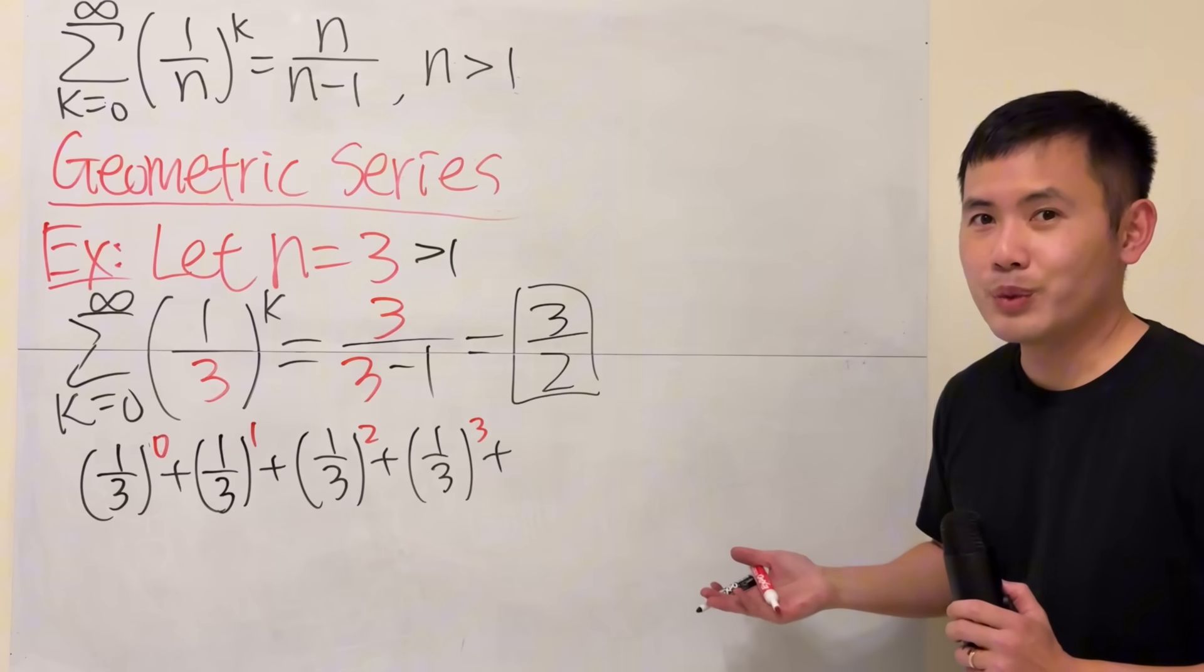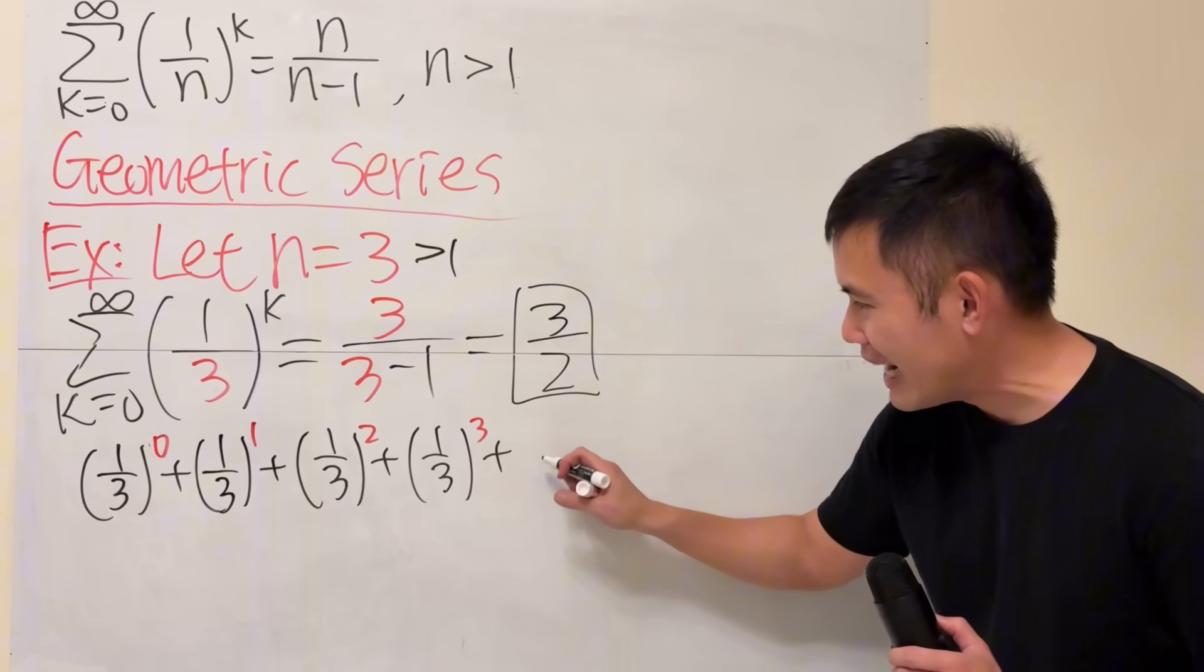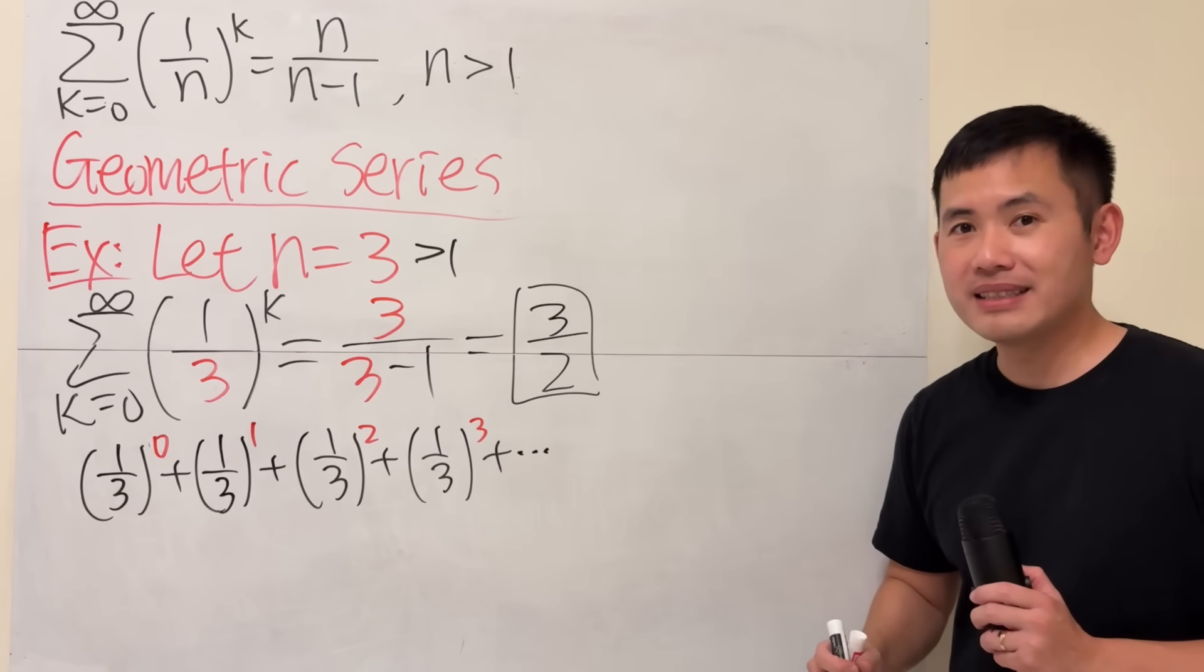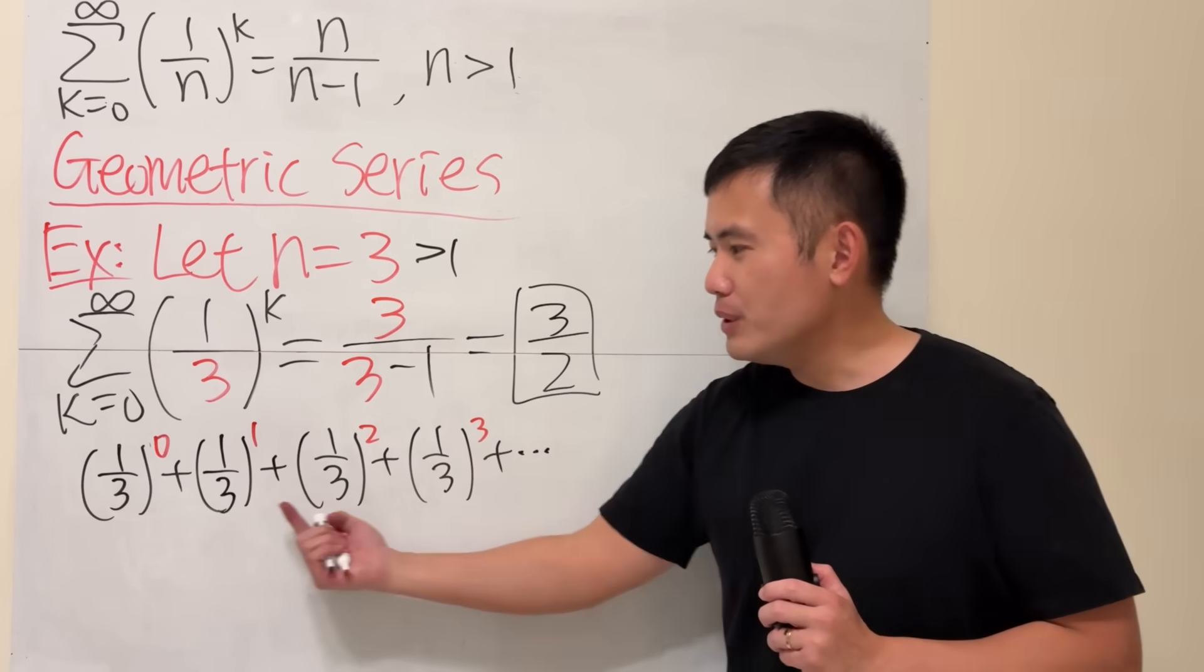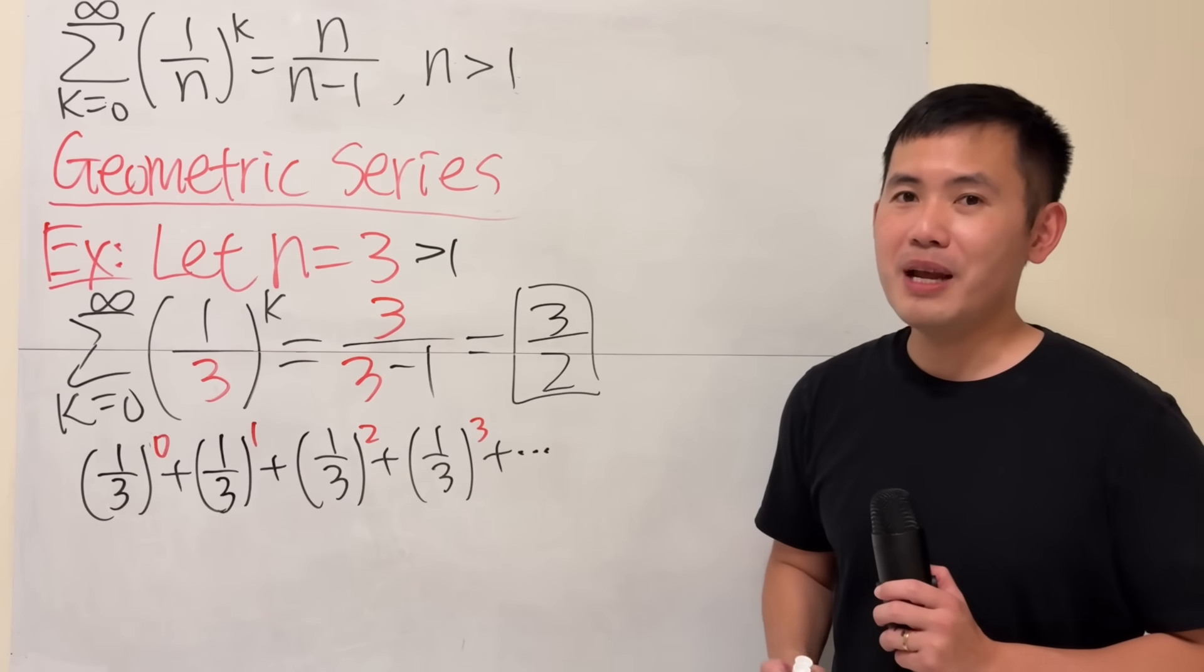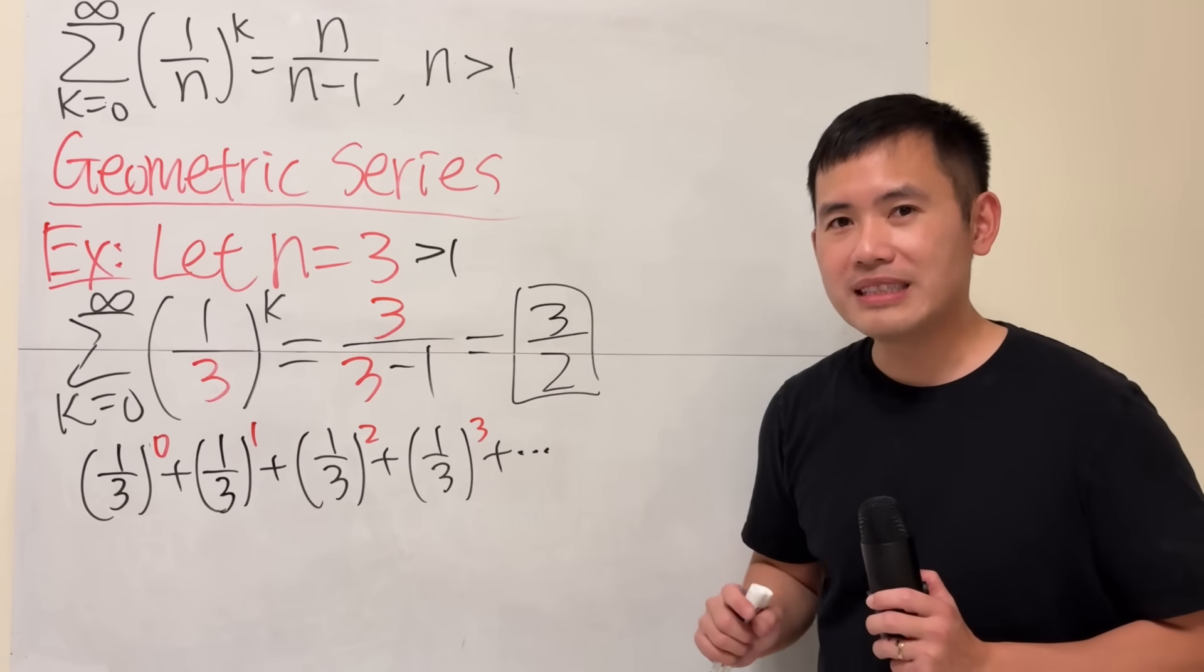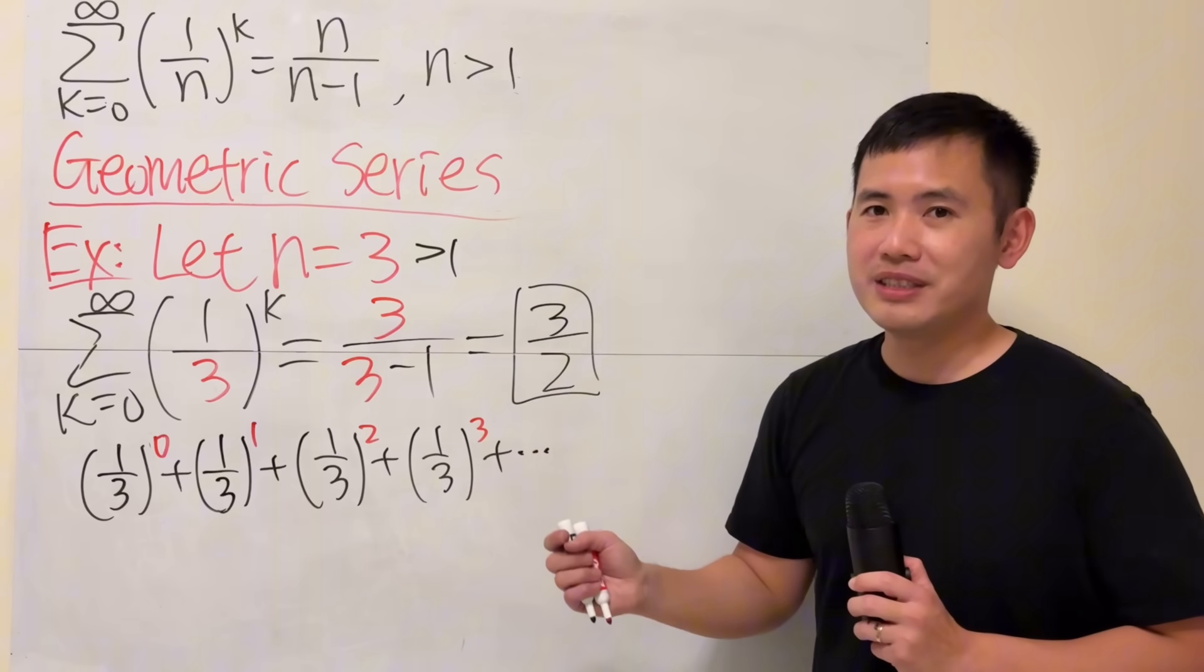When do we start? When do we stop, though? Well, never, because this is infinity. So you just keep adding forever. And usually we just put down plus dot dot dot. Now, if you look at this, notice that the base is always going to be the same. It's just the exponent is changing. Whenever this happens, we have a geometric series.